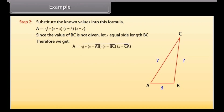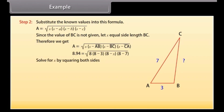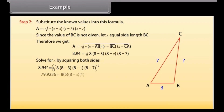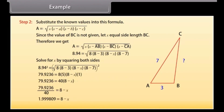By substituting the values we get 8.94 = √(8 × (8−3) × (8−X) × (8−7)). Now solve for X by squaring both sides: 8.94² = 8 × 5 × (8−X) × 1. By calculating, we get X is approximately equal to 6.0.